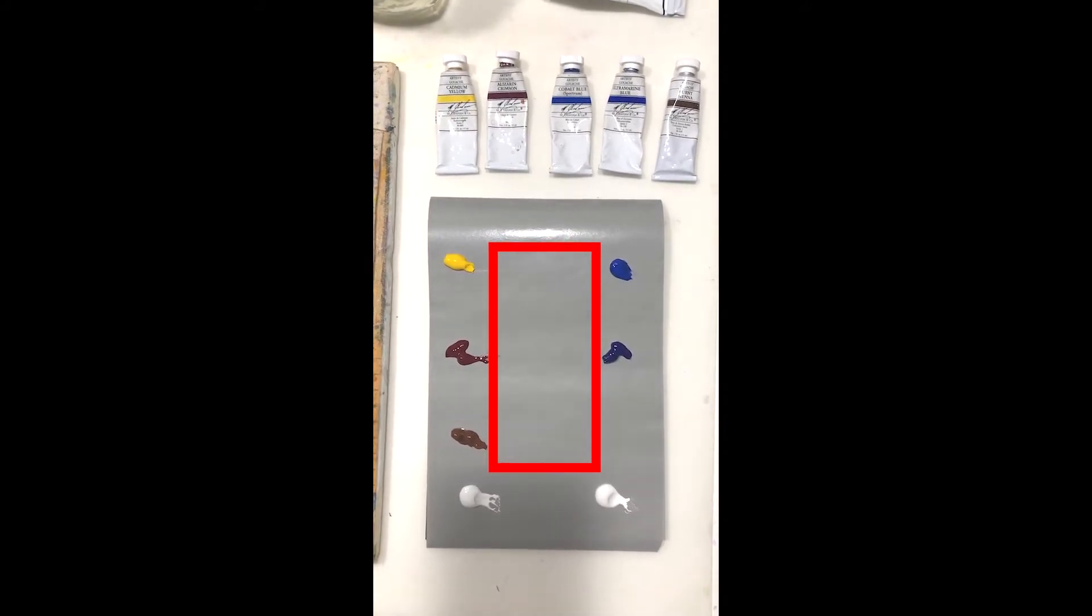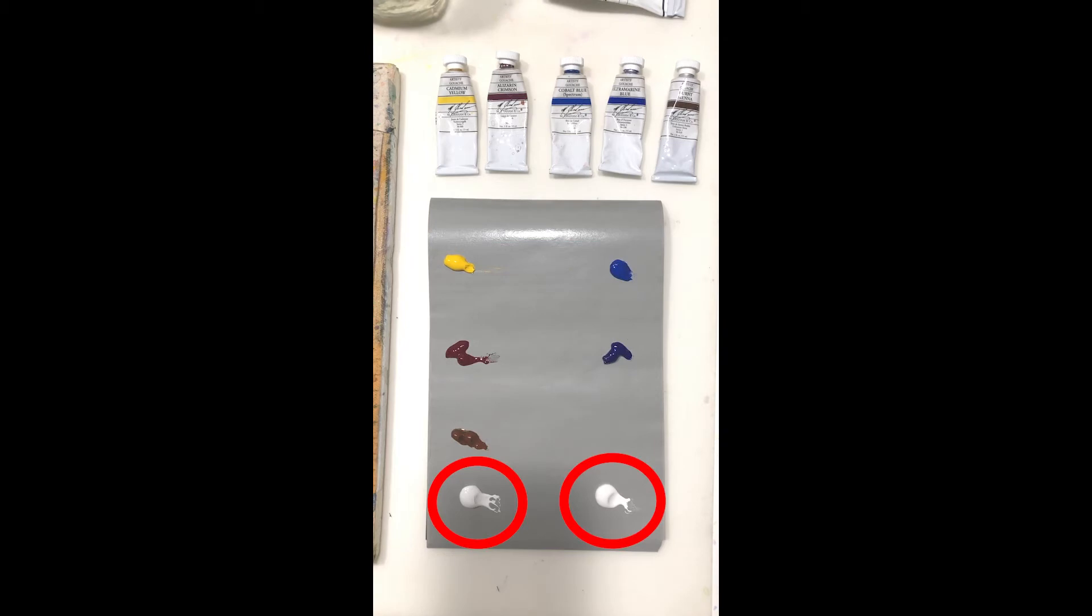And the most important advice would be to have two piles of white, one on the cold side to mix with cold colors and one on the warm side to mix with warm colors.